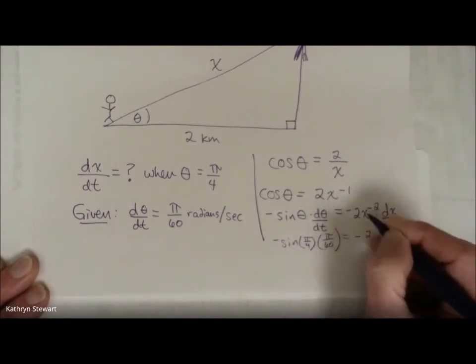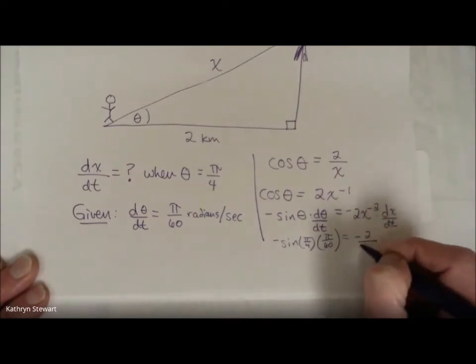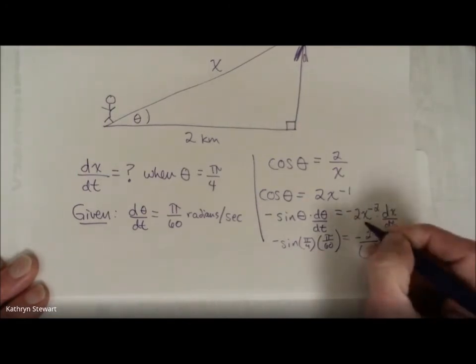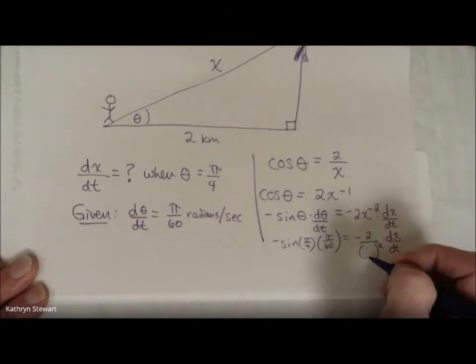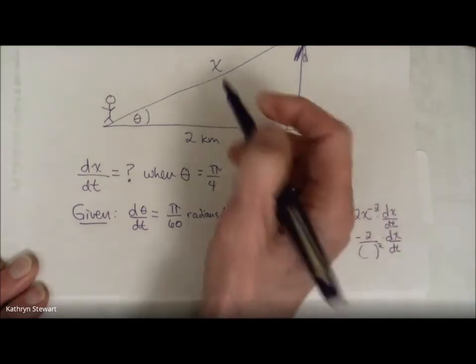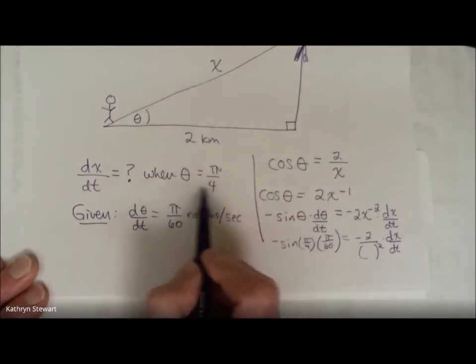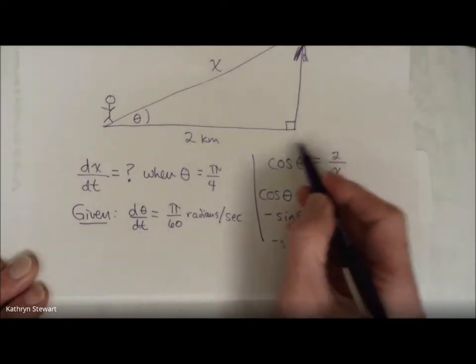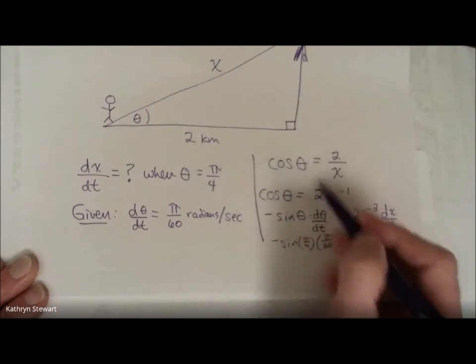Let's see. I'm going to put that x squared in the denominator. That makes it easier for me. dx/dt is what I'm looking for. x, I clearly need to figure out what x is. At this moment, obviously, it's a variable. But at this moment, when theta is pi over 4, can I figure out what x is? Sure I can. I can use this equation right here, the one that I took the derivative of.